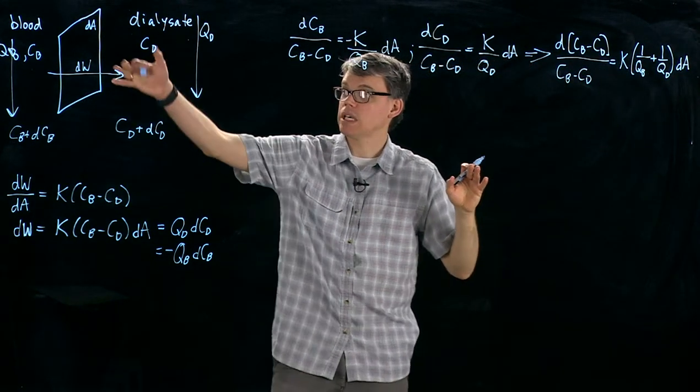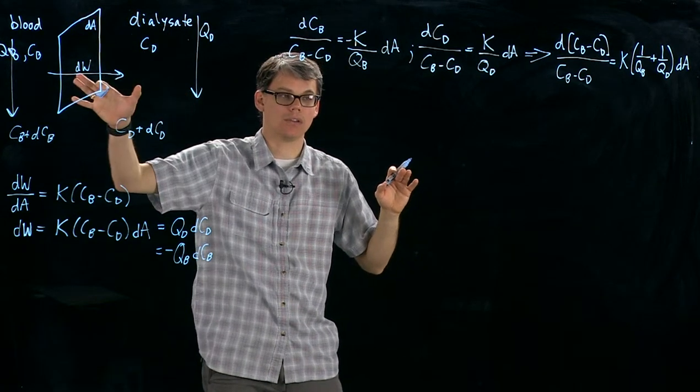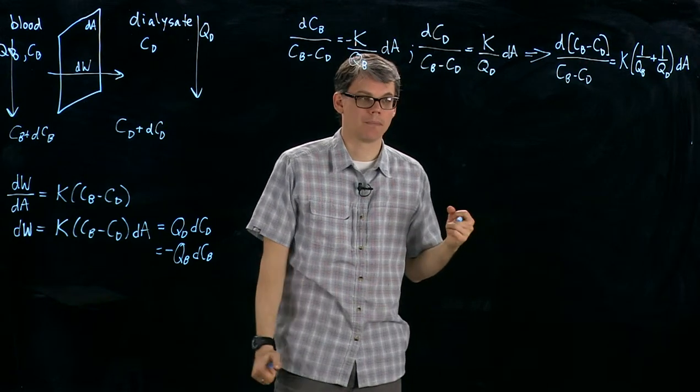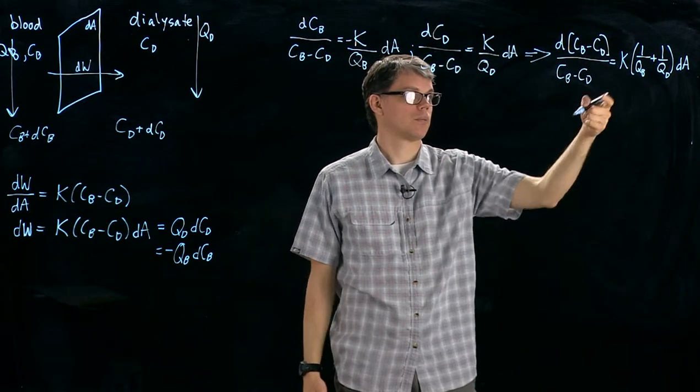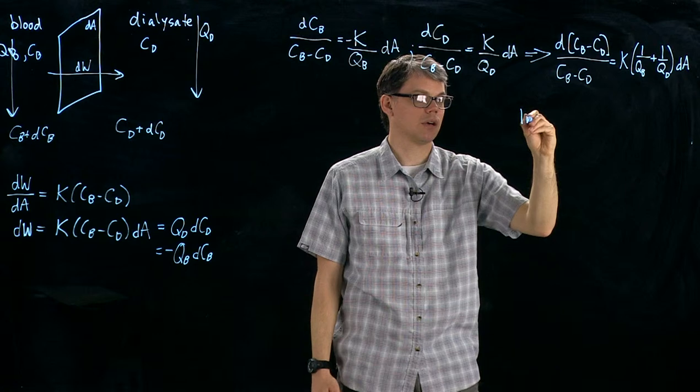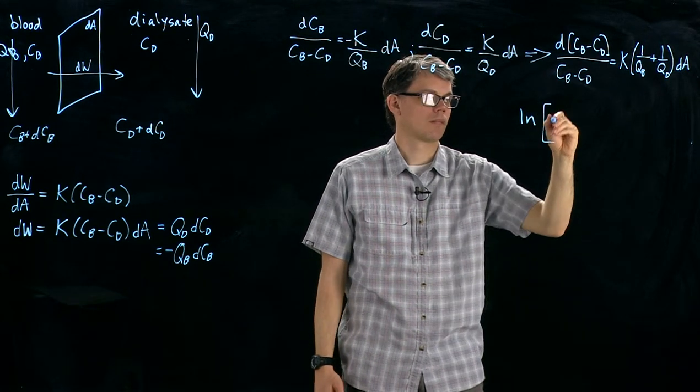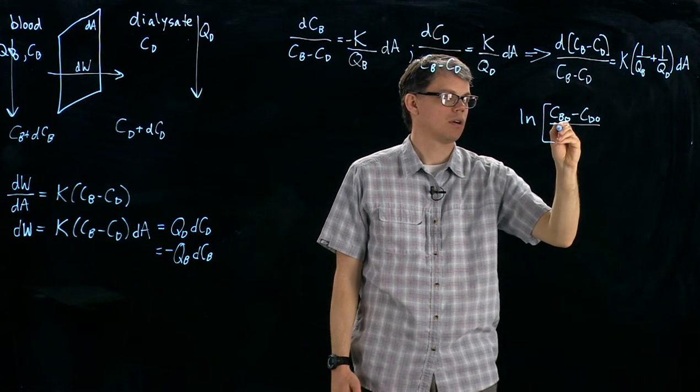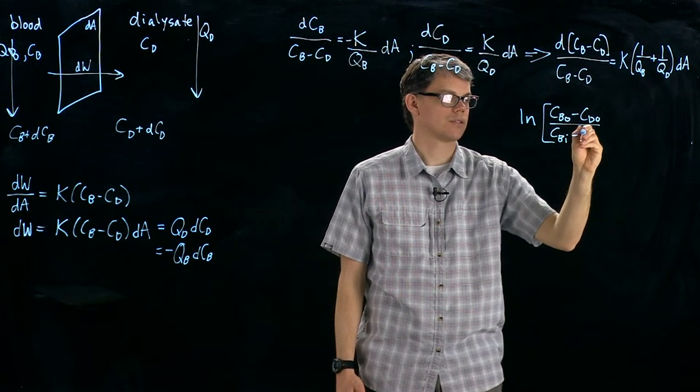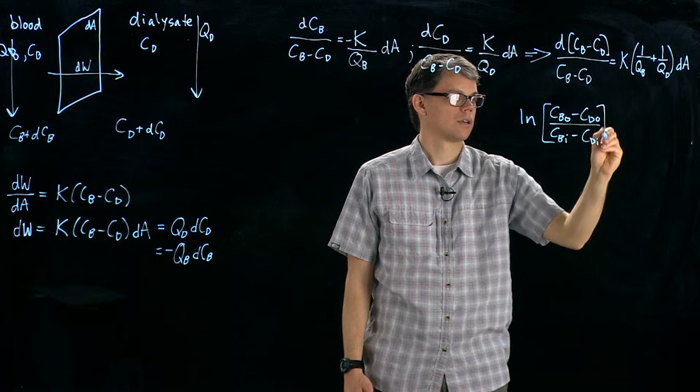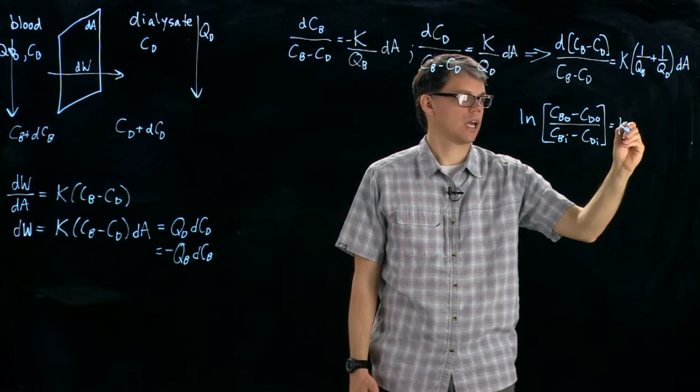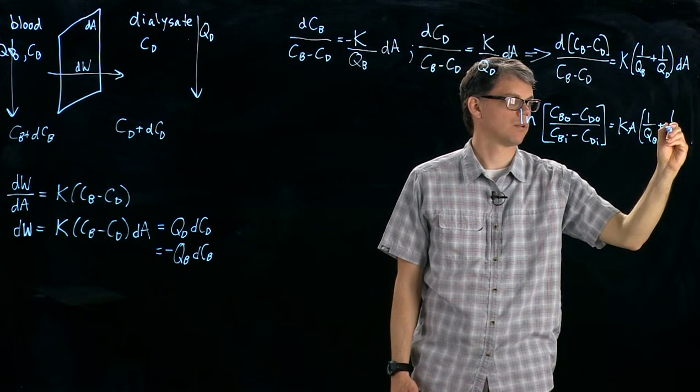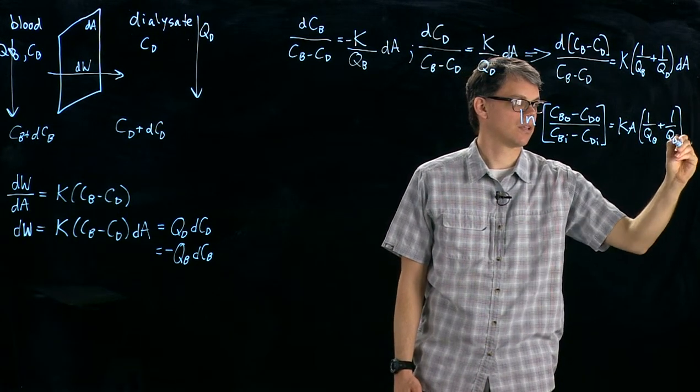So we want to integrate this, and we're going to integrate from the inlet side to the outlet side. And when I do that, we're going to end up with a natural log because of this term. So we're going to end up with natural log of the difference in concentration at the outlet over the difference in concentration at the inlet. And that's KA(1/QB + 1/QD).